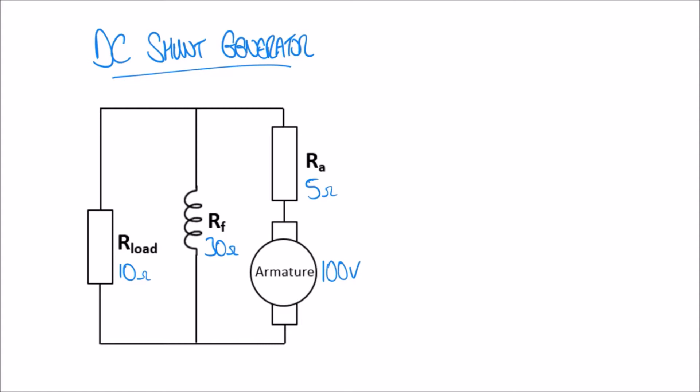We want to calculate the current produced by the armature — I'll call that Ia — and that's going to be equal, using Ohm's law, to V over the total resistance of our circuit. We have a problem because our circuit has parallel elements, so we have to think carefully about how to calculate the total resistance.